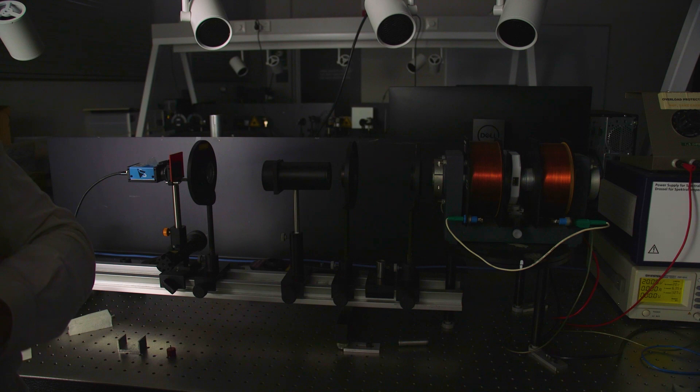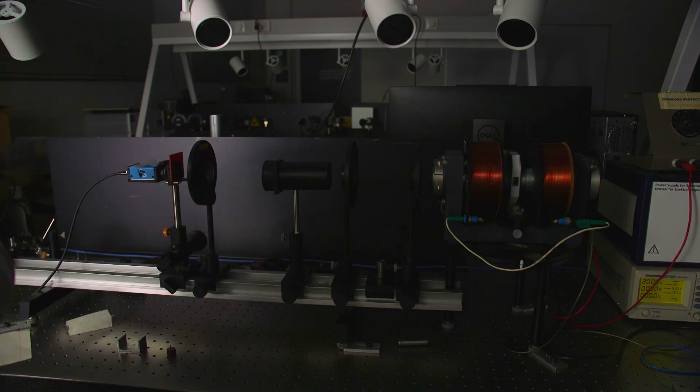Unfortunately these magnetic sublevels are incredibly close to each other in terms of energy and therefore also in terms of wavelength. So in order to discern them we need a very high resolution spectrometer, which is what the setup you see here is used for.